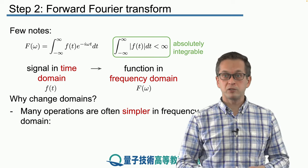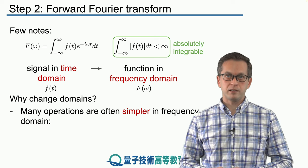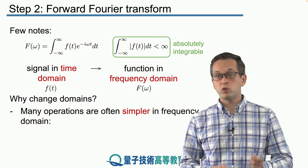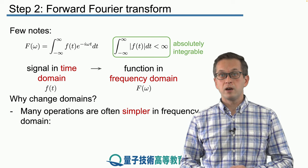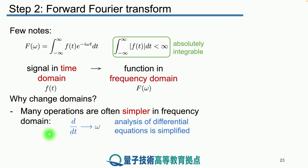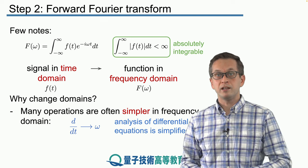For example, if you have a very complicated differential equation that's difficult to solve in the time domain, you can Fourier transform it, go into the frequency domain and solve it there. Why? That's because the time derivatives in the time domain become just multiplication by omega in the frequency domain. So, in that way you see that you go from solving a differential equation in the time domain to just solving a normal algebraic equation in the frequency domain.